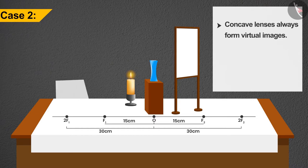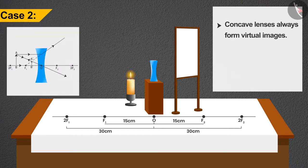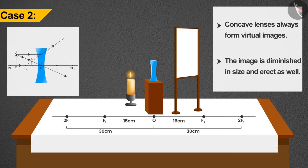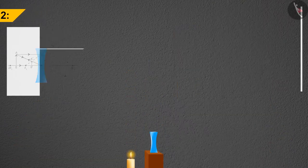So it would be correct to conclude that no matter what the case, concave lenses always form virtual images. If we remove the screen and see, we can find that the image seems to be forming somewhere between F1 and O. The image is diminished in size and erect as well.